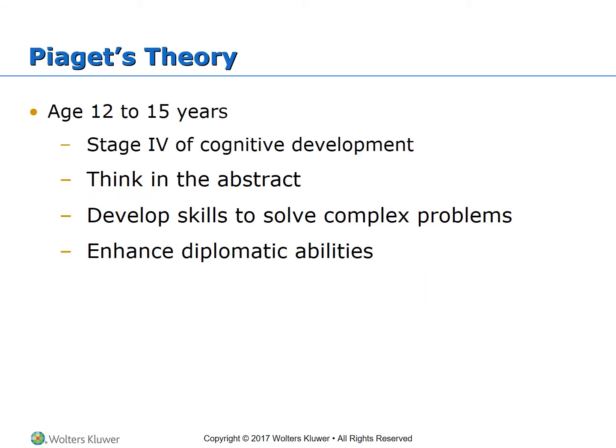Piaget's theory: ages 12 to 15, on page 122. The person from about 12 to 15 years of age enters stage four of cognitive development, which is formal operations. They can think in abstract, they have the ability to develop skills to solve complex problems, and they enhance diplomatic abilities. They are able to sort through different plans and devise different solutions to situations before they act on them.